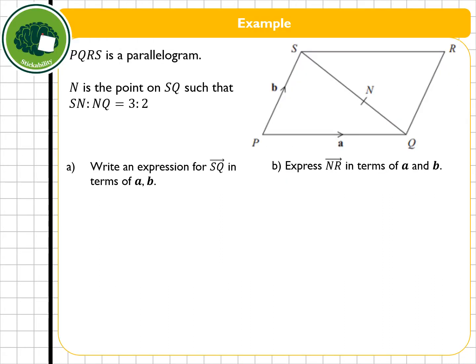Time for an example. PQRS is a parallelogram. N is the point on SQ such that SN to NQ is 3 to 2.